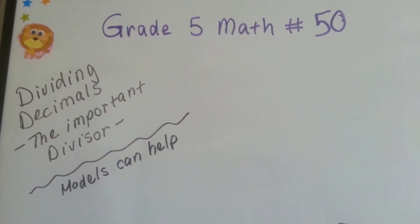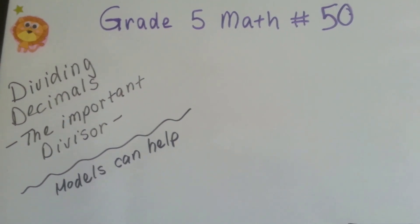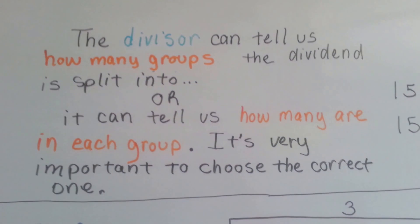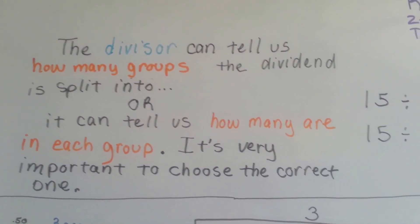Grade 5 math number 50. Dividing decimals. The important divisor and models can help. The divisor can tell us how many groups the dividend is split into, or it can tell us how many are in each group. It's very important to choose the correct one.